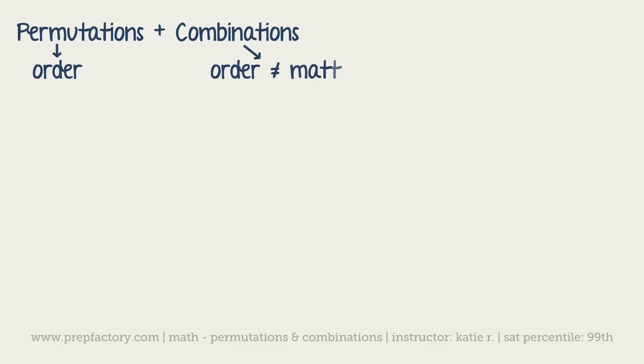For instance, a permutation would be like how many different ways can three people stand in a line. The order matters because if it's person one, two, three, that's different than person two, three, one.